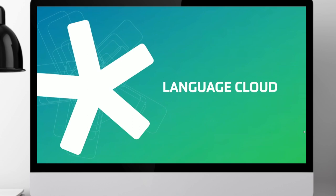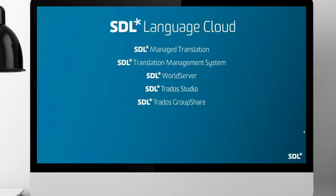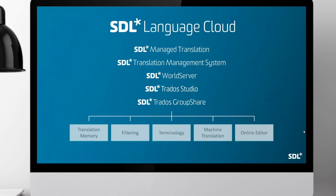We'll finish with a few slides on Language Cloud. SDL Language Cloud today already provides key functionality used by existing products — SDL Managed Translation, TMS, World Server, Studio, and GroupShare are all using capabilities such as translation memory, filtering, terminology, machine translation, and the online editor. But SDL Language Cloud going forward will be much more than just a hosting place — it will have its own user interface, user experience, and features and functionality built on these core language technologies.